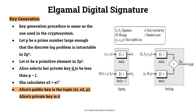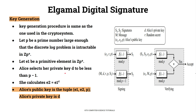We select E1 and D. As you choose D, E2 is computed as E1 raised to D. The public key components are E1, E2, and P. D is the private key. This completes the key generation process.